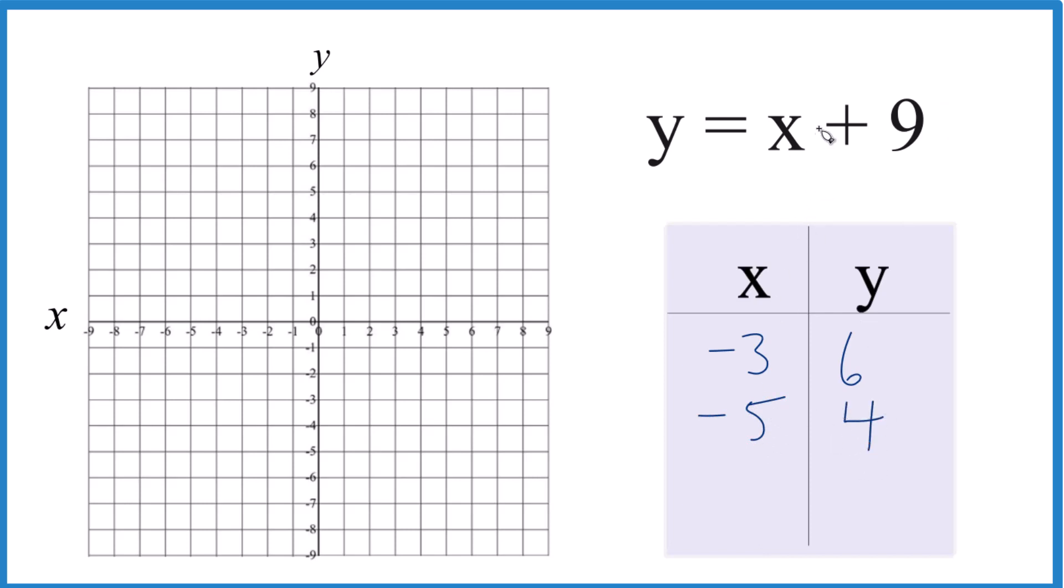And how about we do negative 9. Negative 9 plus 9, that's 0. But I don't want to do negative 9, that would be too far. So how about negative 7? Negative 7 plus 9, that gives me 2. So negative 7 would give me 2.